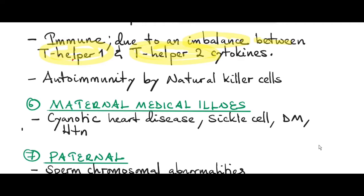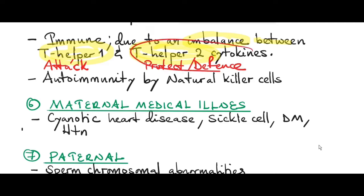T-helper 1 cells produce pro-inflammatory cytokines — the attack cells — which attack fetal cells, whilst T-helper 2 cells produce anti-inflammatory cytokines that protect fetal cells as a defense mechanism. For a successful pregnancy, you need more T-helper 2 cytokines than T-helper 1. Another cause is autoimmunity by natural killer (NK) cells, which can sometimes malfunction and cause self-destruction, including destruction of fetal cells.